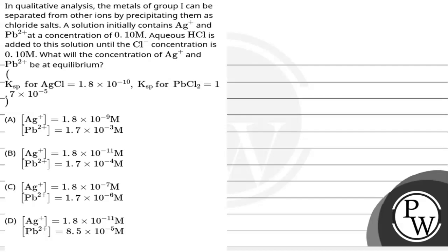Hello, let's read the question. The question says, in qualitative analysis, the metals of group 1 can be separated from other ions by precipitating them as chloride salts.